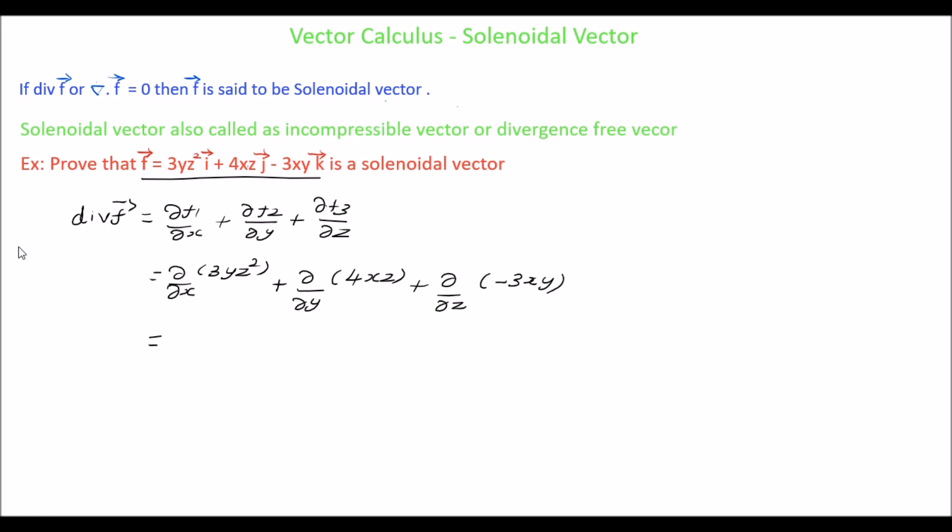Now we have to differentiate. In the first term there is no x term, it is treated as a constant and the differentiation value is 0. In the second term we only have x and z, there is no y term so the differentiation value is 0. In the third term also there is no z term, we have only x and y so it is treated as a constant and the differentiation value is 0.